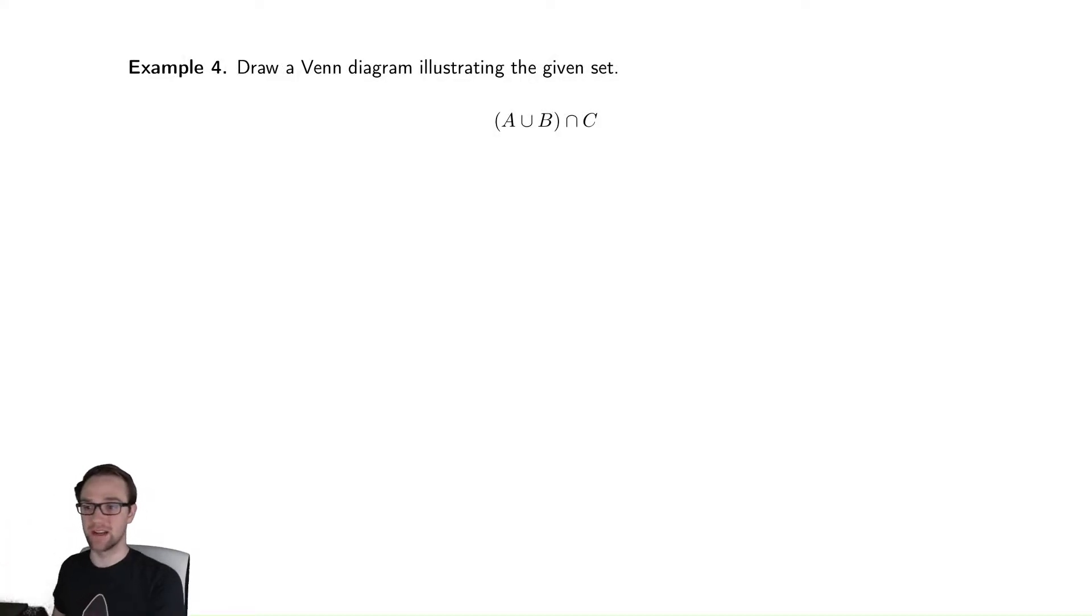In this video we're going to make sure that we understand our union and intersect operations by trying to just draw the proper Venn diagram. Here we have three sets.